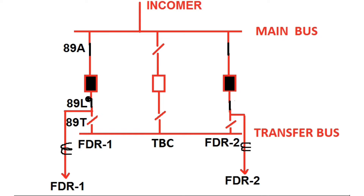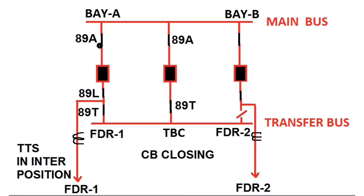Now, due to an online condition, this bay needs to be diverted to the TBC breaker. There may be a problem arising in this bay — either in 89A or 89L within this location — or this breaker needs to be shut down for maintenance purposes. So as the problem arises in this bay, during online condition feeder 1 needs to be diverted to the TBC bay.